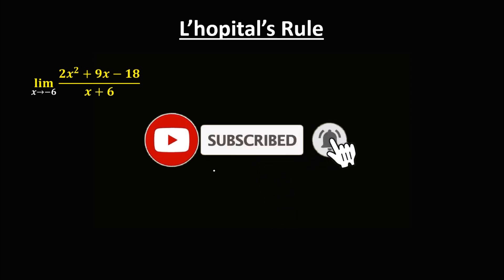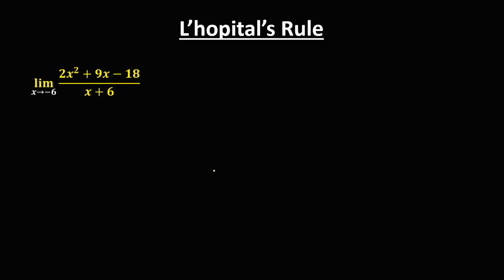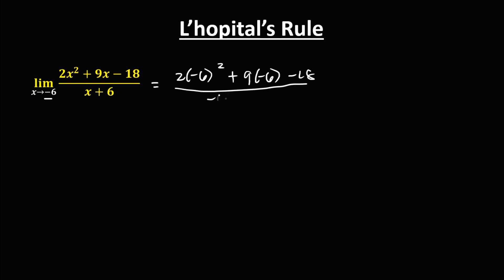Welcome to MathStorya. Let's have this topic: finding the limits using L'Hôpital's rule. We have this given, and if we're going to use direct substitution, since x approaches negative 6, this becomes 2 times negative 6 squared plus 9 times negative 6 minus 18, then over negative 6 plus 6.